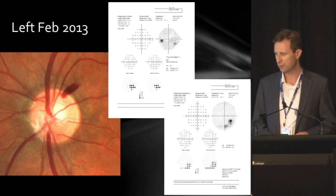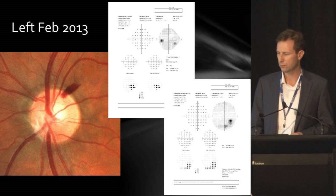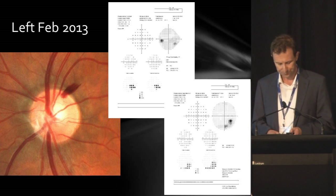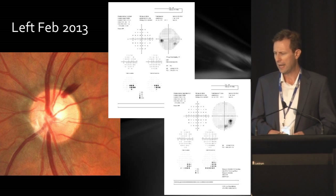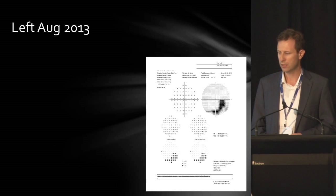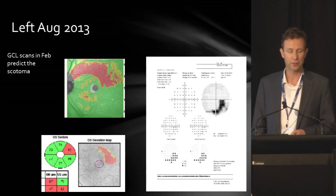A further point: going back to his fields, in February of last year when we first saw the Drance haemorrhage, there was a very early field defect on the left 24-2, and on the 10-2 as well. The patient was actually very reliable in reporting these scotomas. Then, looking at his field in August, that field defect had progressed to a significant, quite central one. Going back to the scan in February, the ganglion cell scans on the NIDEC and the Cirrus actually predicted the field defect that was subsequently going to develop.